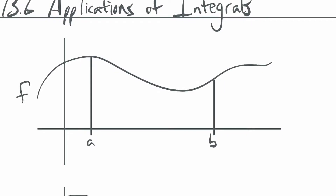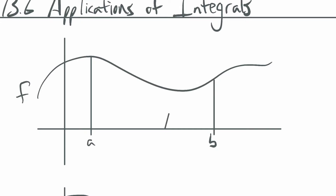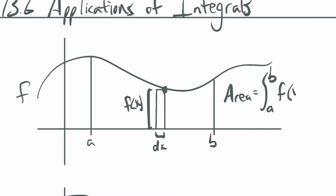In the last video, we spent time talking about areas under functions — like if we wanted the area under a graph from A to B. We use rectangles, where one corner determines the height, the width is dx, and the height is f of x. So the area is the integral from A to B of f of x dx.